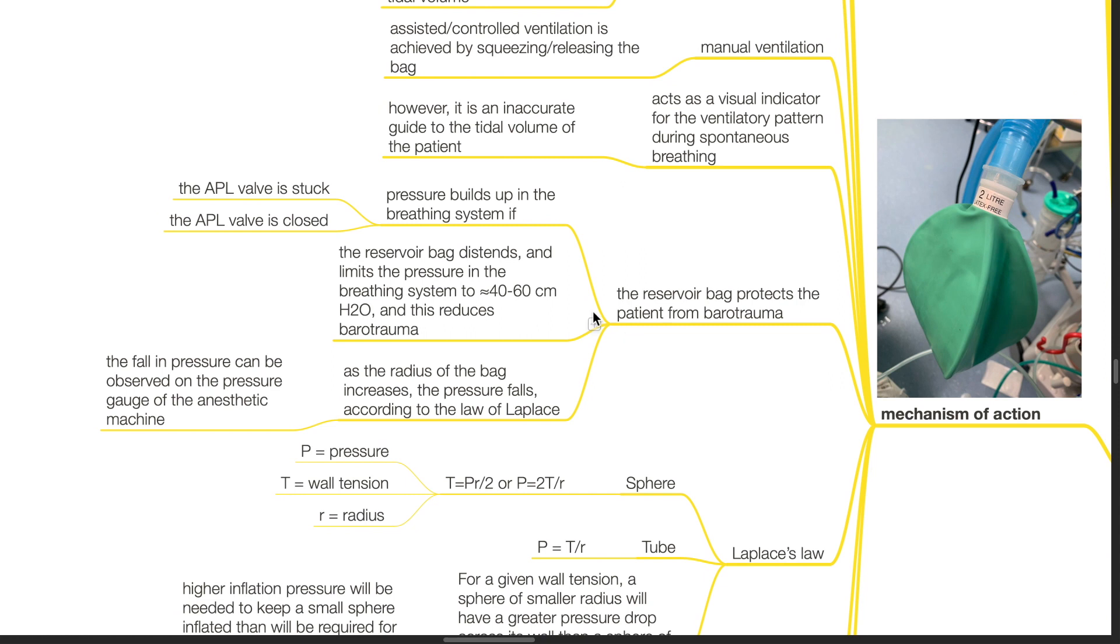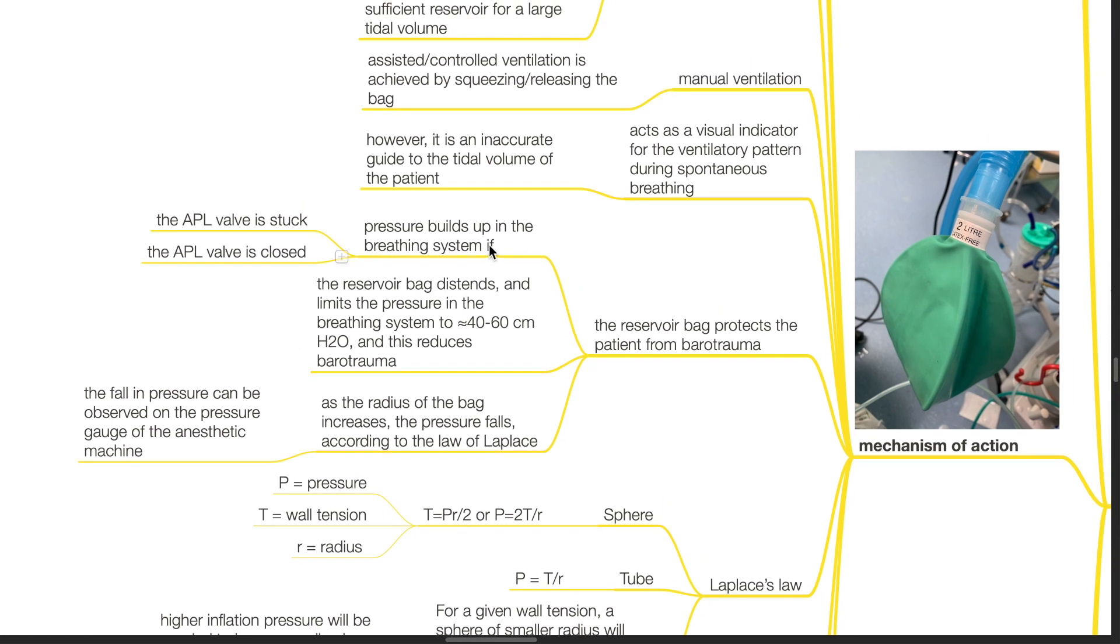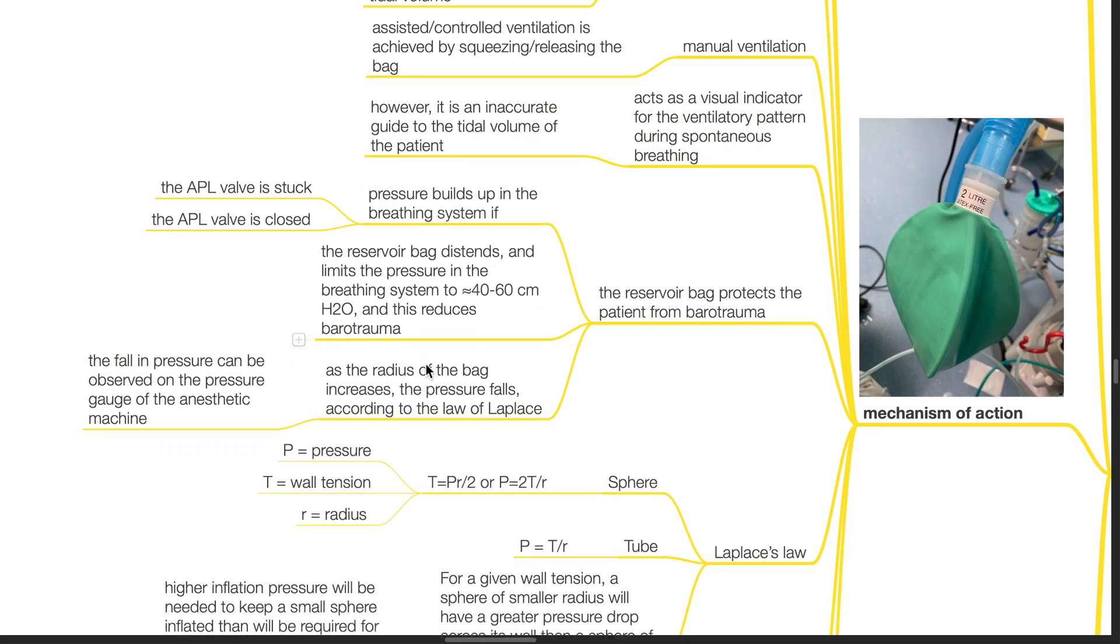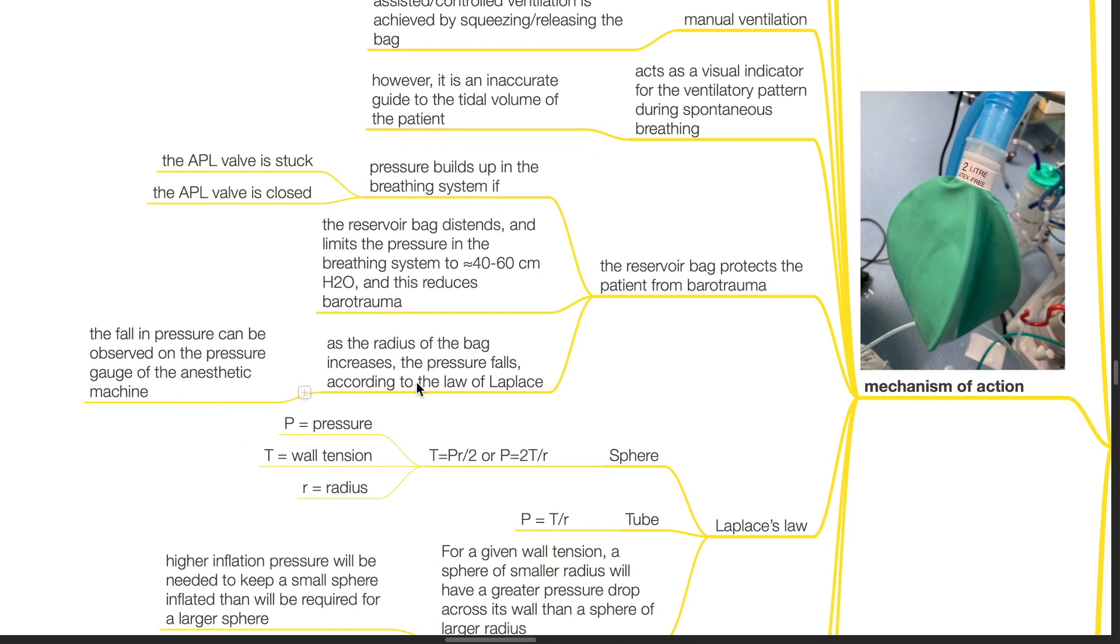The reservoir bag protects the patient from barotrauma. Pressure builds up in the breathing system if the APL valve is stuck or closed. The reservoir bag distends and limits the pressure in the breathing system to 40 to 60 CMH2O and this reduces barotrauma. As the radius of the bag increases, the pressure falls according to the law of Laplace. The fall in pressure can be observed on the pressure gauge of the anesthetic machine.